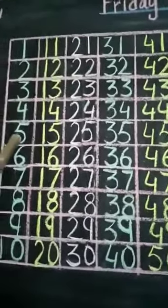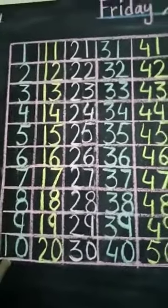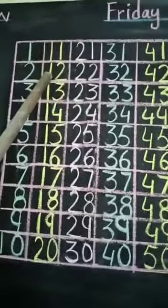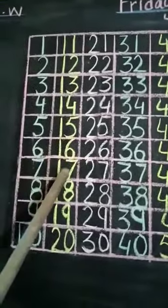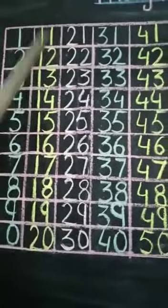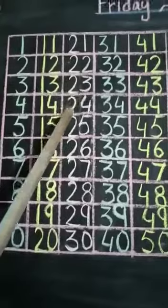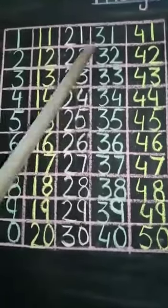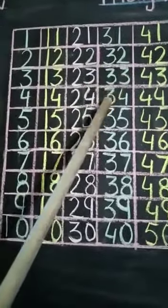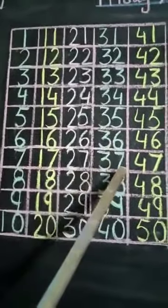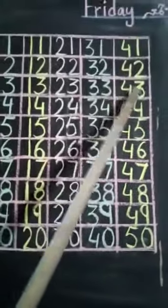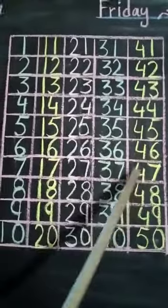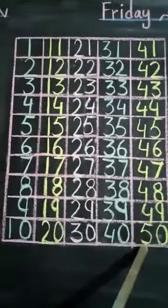Now we will do reading. 1, 2, 3, 4, 5, 6, 7, 8, 9, 10, 11, 12, 13, 14, 15, 16, 17, 18, 19, 20, 21, 22, 23, 24, 25, 26, 27, 28, 29, 30, 31, 32, 33, 34, 35, 36, 37, 38, 39, 40, 41, 42, 43, 44, 45, 46, 47, 48, 49, 50.